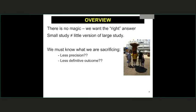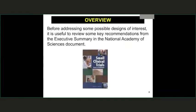With any small study, we're sacrificing something. Part of the planning discussions involve coming up with some sense of what we're willing to sacrifice. Do we want a less definitive outcome? Do we want to address less precision? Do we want to relax the type one error rate that we will consider for declaring significance and moving forward? All of these are important things that have to be addressed.